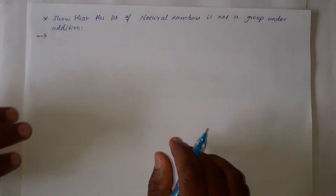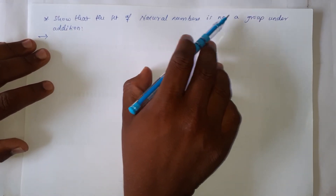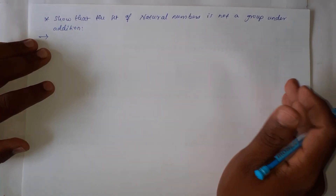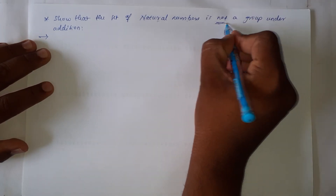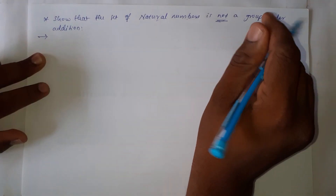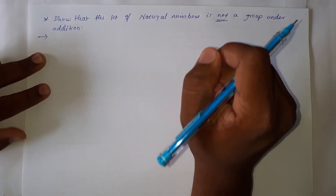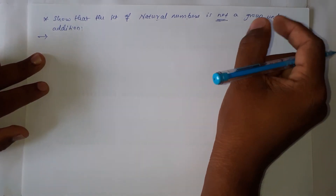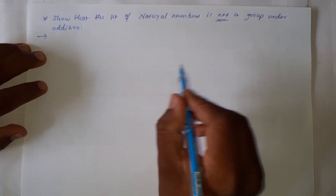The next example: show that the set of natural numbers is not a group under addition. We need to prove that the set of natural numbers is not a group. Any set is not a group if it does not satisfy any one of the four laws: closure law, associative law, identity law, and inverse law.